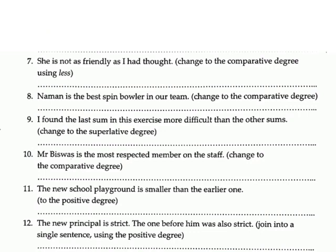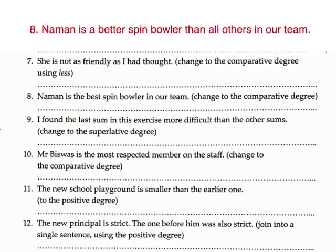8. 'Niman is the best spin bowler in our team' — change to the comparative degree. Answer: Niman is a better spin bowler than all others in our team.